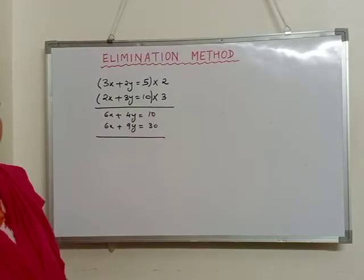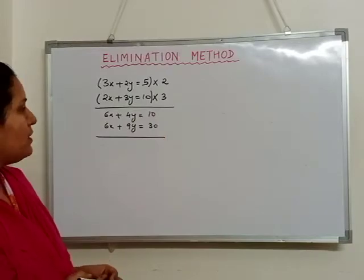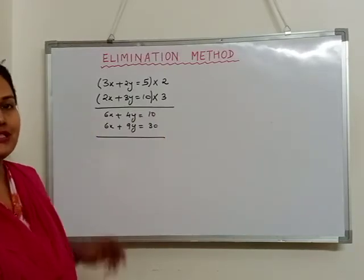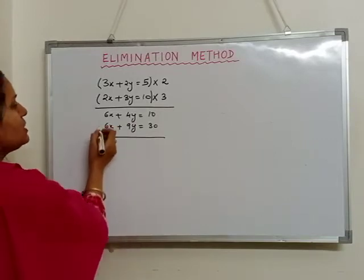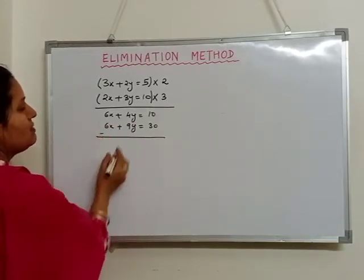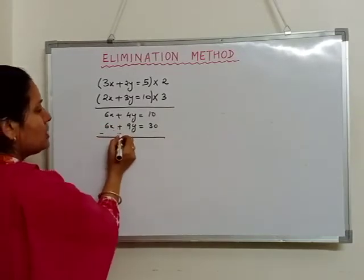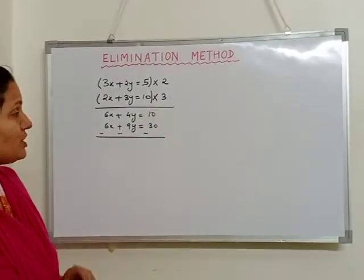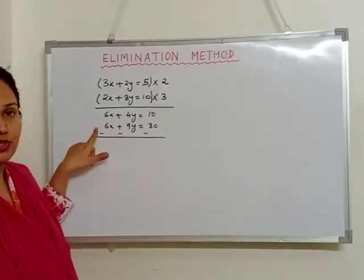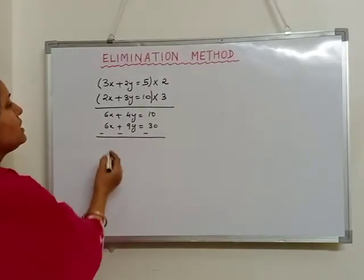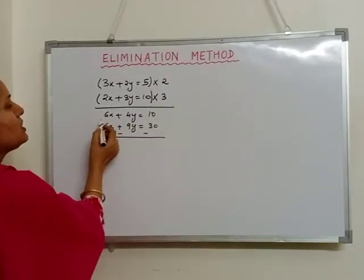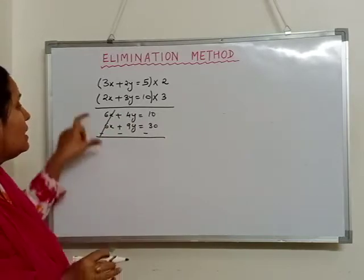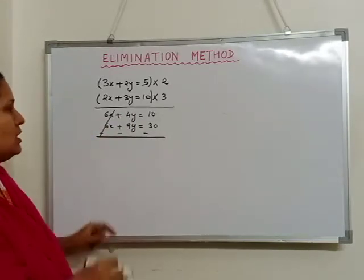These are the two different equations. Now since I want to eliminate x, I have to change the sign. That means since the positive sign is there, I have to write a negative sign. I have changed the sign of the second equation. Since the positive sign and negative sign get cancelled, I have eliminated the variable x.